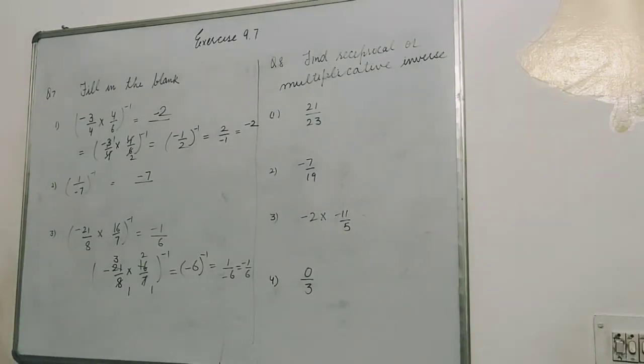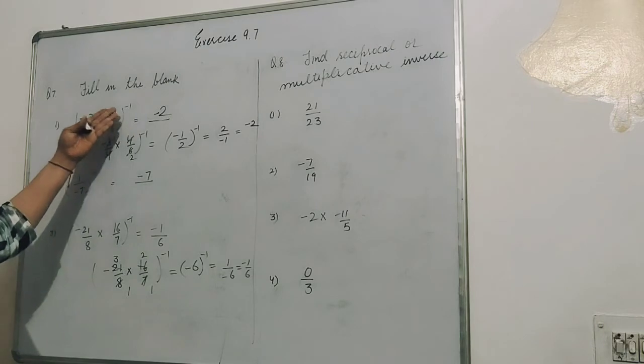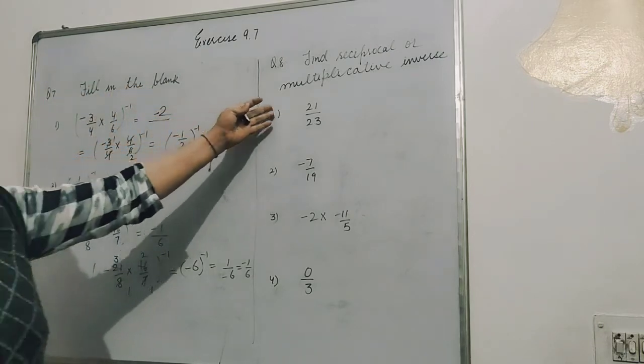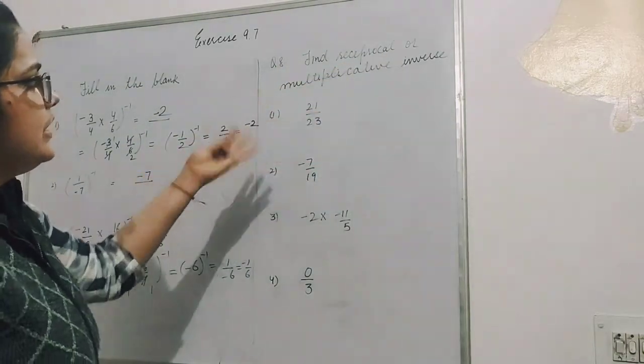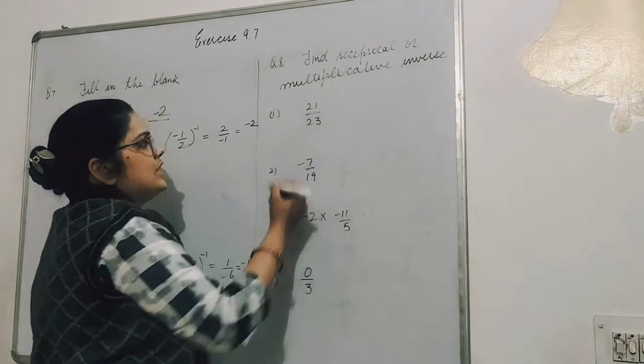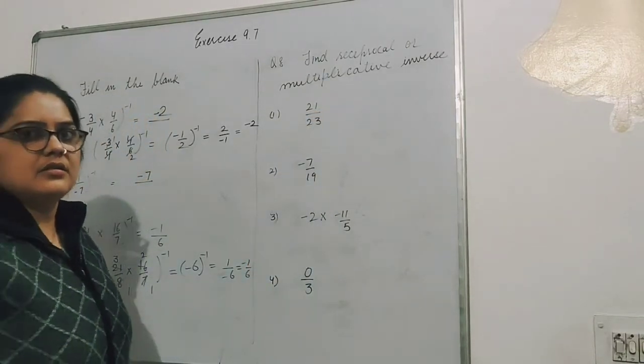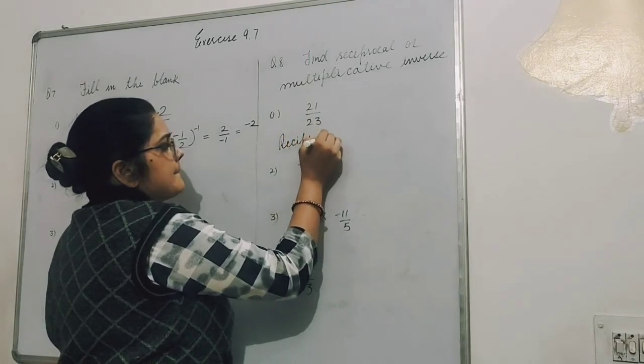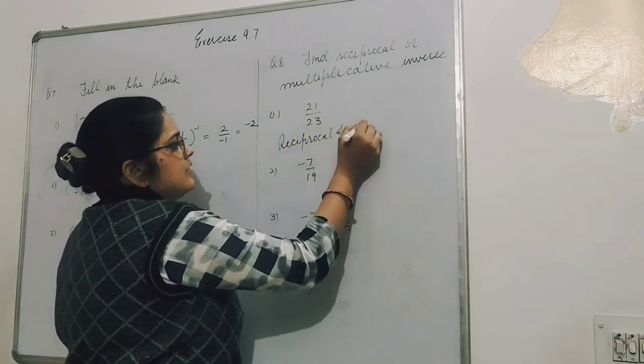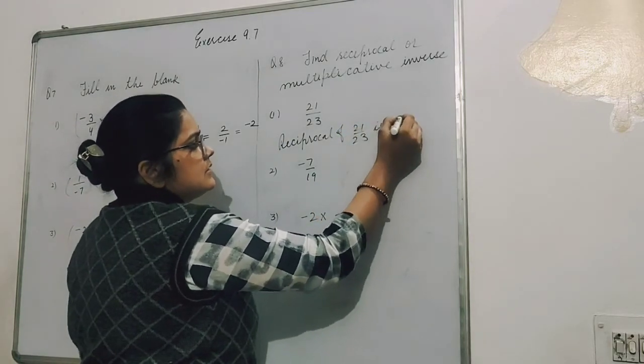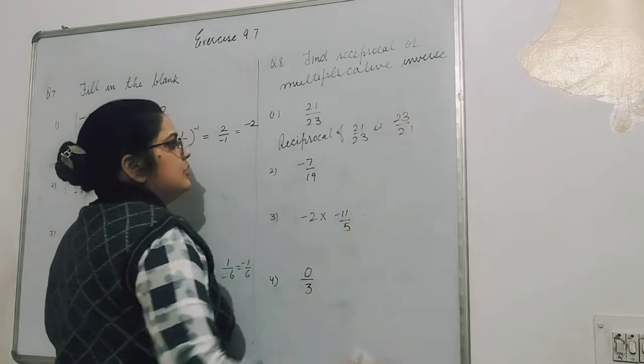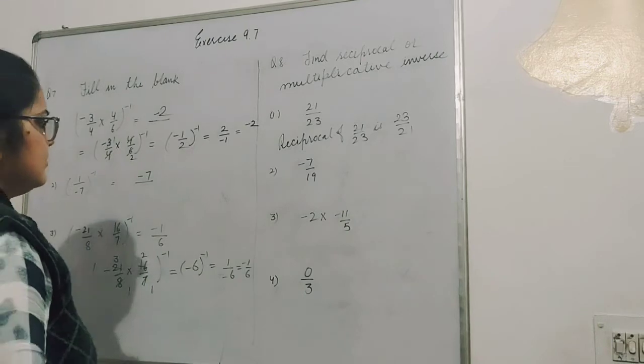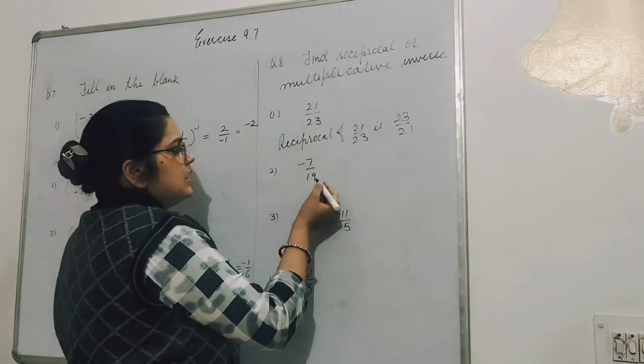Next question: find the reciprocal. Previously they used minus 1 symbol for inverse, here they've written it in the question: find reciprocal and multiplicative inverse. So multiplicative inverse or reciprocal of 21 upon 23 is 23 upon 21. Numerator becomes denominator, denominator becomes numerator.